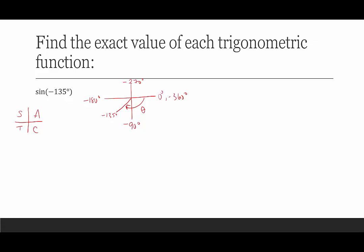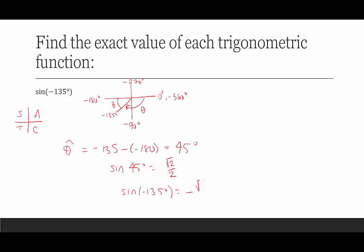The reference angle is between the x-axis and the terminal side. Reference angle = negative 135° minus negative 180° = 45°. If you subtract backwards and get negative 45°, just drop the sign — the reference angle is always a positive acute angle. Sine of 45° is √2/2, and since we're in quadrant 3, sine of negative 135° is negative √2/2.